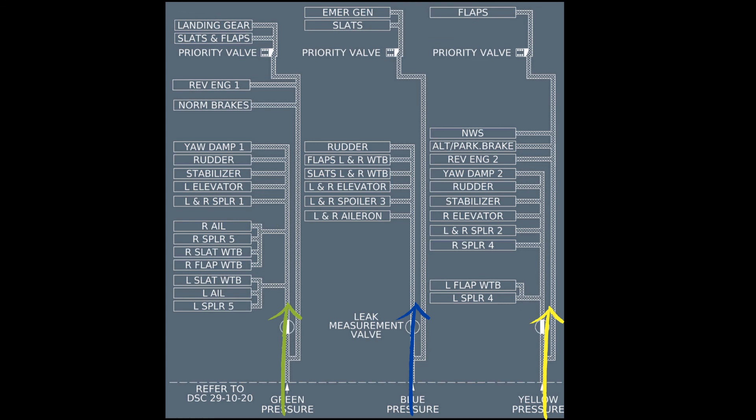An important design feature of the Airbus is that all flight control users are supplied by at least two hydraulic systems. This ensures that even in the case of the failure of one hydraulic system, the flight control user is still supplied with hydraulic power. For example, the rudder is supplied by all three hydraulic systems.